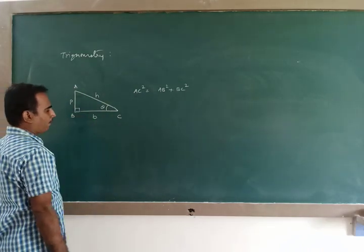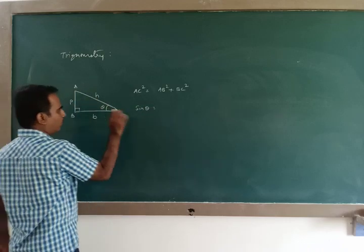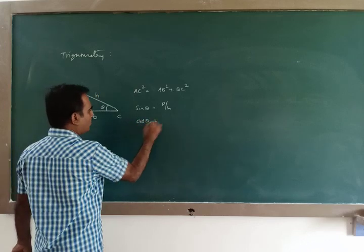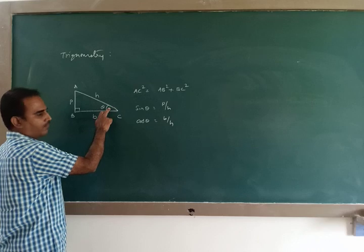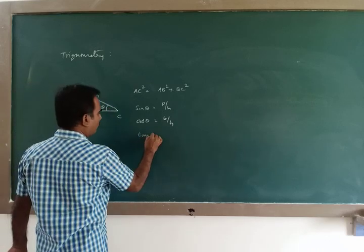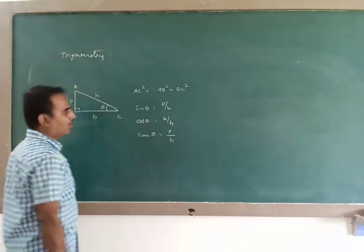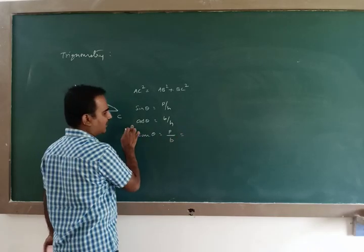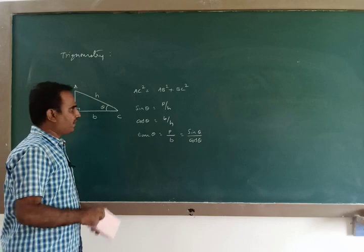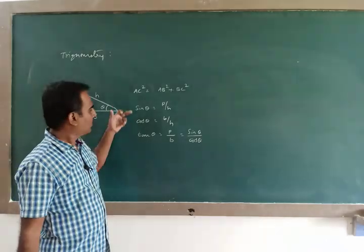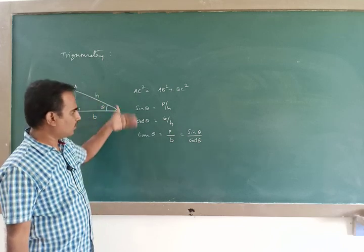If you find the ratio of the opposite side to the hypotenuse, that is called sine of the angle: sin θ = opposite / hypotenuse. If you find the ratio of adjacent side to hypotenuse, that is cosine: cos θ = adjacent / hypotenuse. The ratio of opposite side to adjacent side is called tan θ, which can also be written as sin θ / cos θ. The reciprocal of sin θ is cosecant θ, the reciprocal of cos θ is secant θ, and the reciprocal of tan θ is cotangent (cot θ).